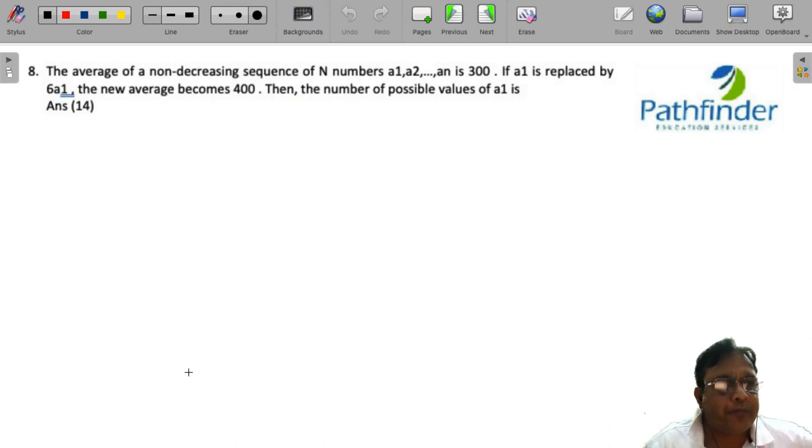CAT 2022 Slot 2 Quantitative Aptitude Question Number 8: The average of a non-decreasing sequence of numbers a1, a2, and so on till an is 300. If a1 is replaced by 6 times a1, the new average becomes 400. The number of possible values of a1 is...